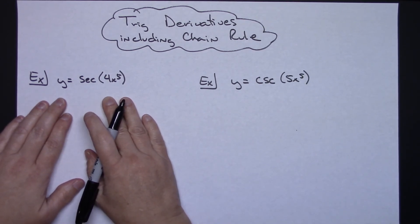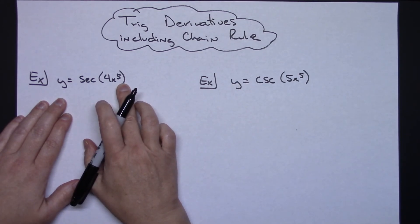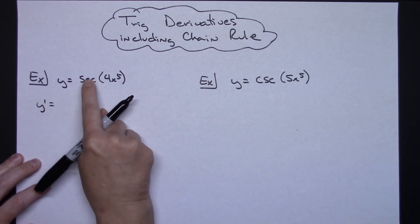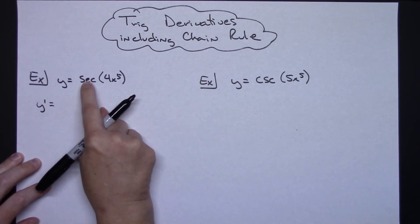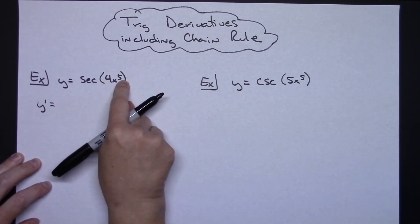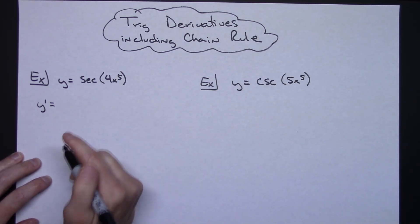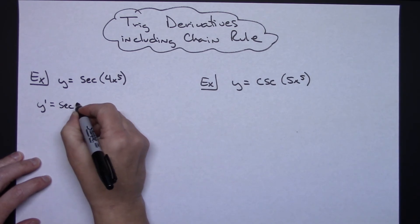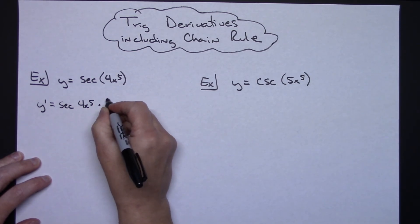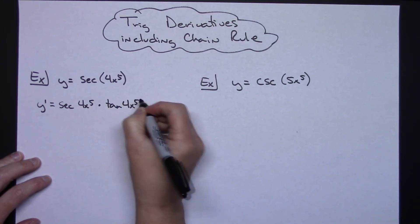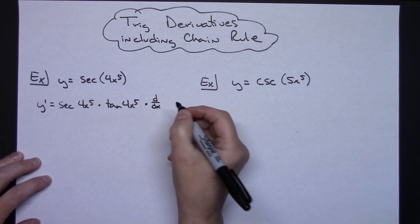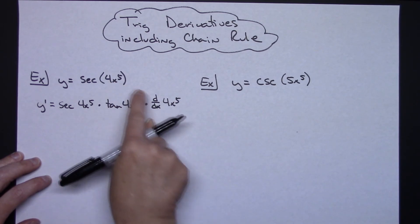In this first example, y equals secant of 4x to the fifth. If I'm going to take the derivative, y prime — I have to have the derivative of secant memorized as secant tangent. Secant is the outside function, and 4x to the fifth is the inside function, so I'm going to have to include a chain. Derivative of secant is secant tangent, so secant of 4x to the fifth times tangent of 4x to the fifth, times the derivative of the inside function — the derivative of 4x to the fifth.